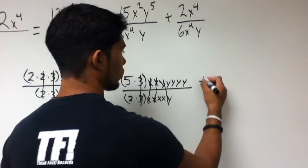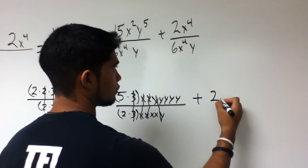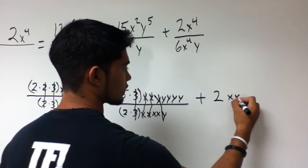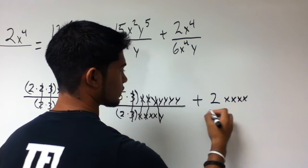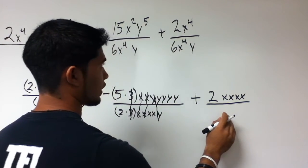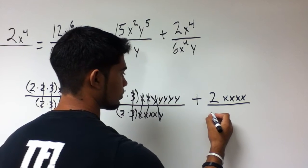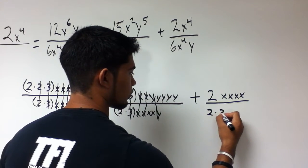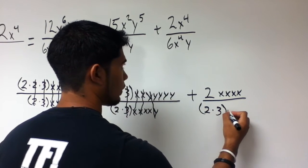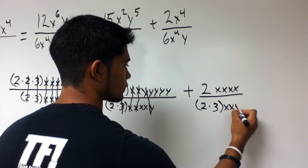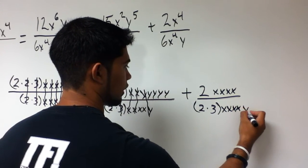Moving on to this last piece. 2 remains as 2. X, x, x, x to represent the x to the 4th. And then on the bottom, 6 breaks down to 2 and 3. And we have 4 x's and 1 y.